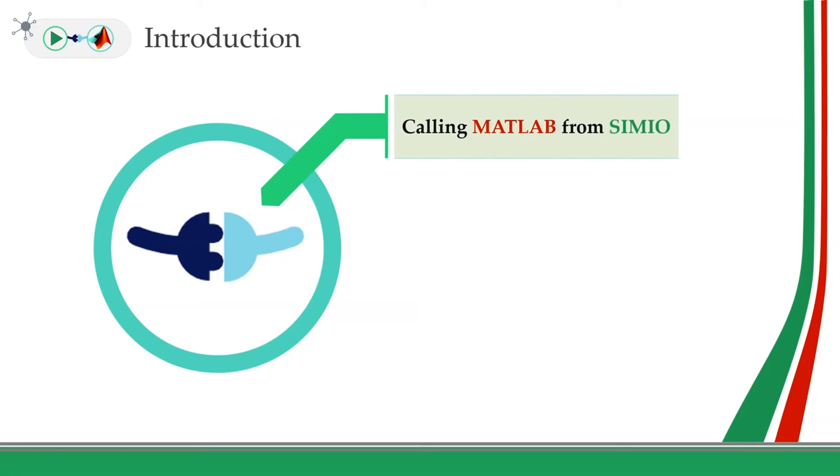So in these series of videos, I will talk about two different methods that you can link these two software packages. In part one, I will talk about how we can call MATLAB from SIMEO. So basically SIMEO will be the main manager and MATLAB will be called based on different trigger events inside the simulation model. For the second part, MATLAB can call SIMEO to run experiments from a simulation software. This video is focused on the first part, which is calling MATLAB from SIMEO.